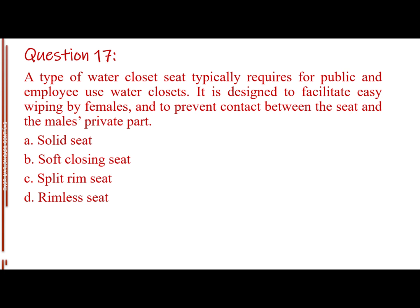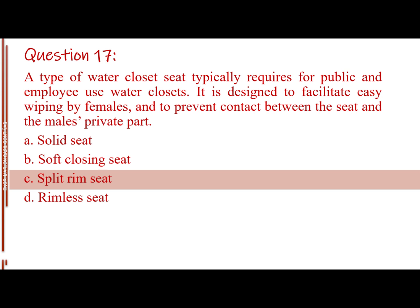Question number 17. A type of water closet seat typically required for public and employee use water closets. It is designed to facilitate easy wiping by females and to prevent contact between the seat and the male's private part. Letter A, solid seat. Letter B, soft closing seat. Letter C, split rim seat. Letter D, rimless seat. The answer is Letter C, split rim seat.